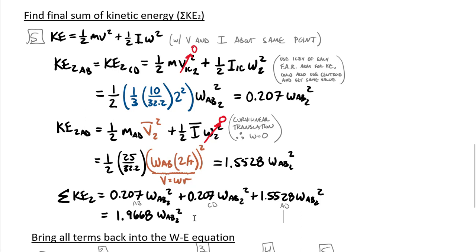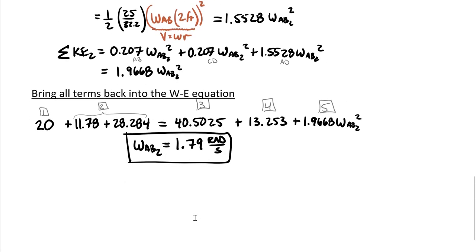Bringing all these numbers back into my original equation—my gravitational potential energy initial, my work terms, my gravitational potential energy final, my spring energy, and then finally my final kinetic energy—I can then compute all the way through, not forgetting to take a square root of this omega AB squared, and end up with 1.79 radians per second, a final angular velocity of the system at theta equals 45 degrees.